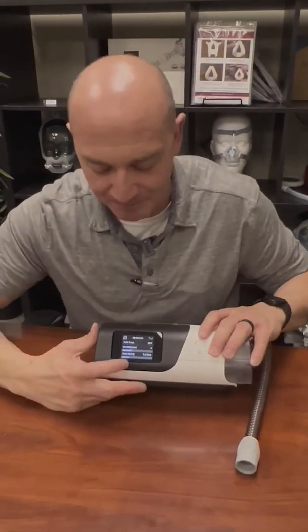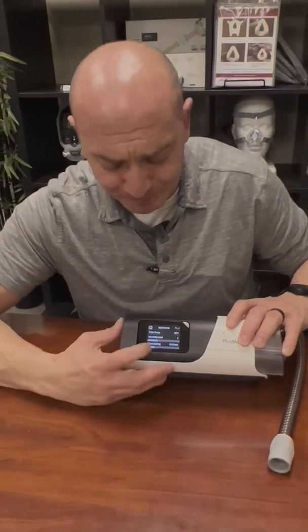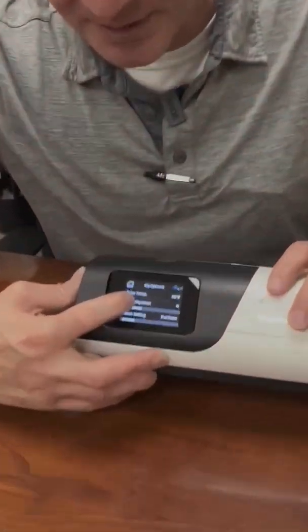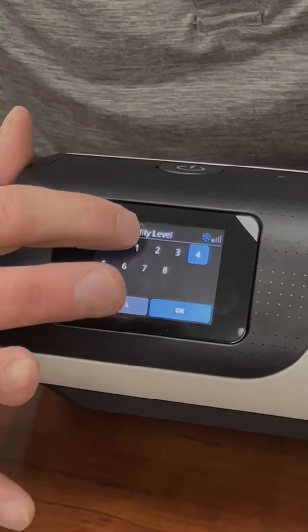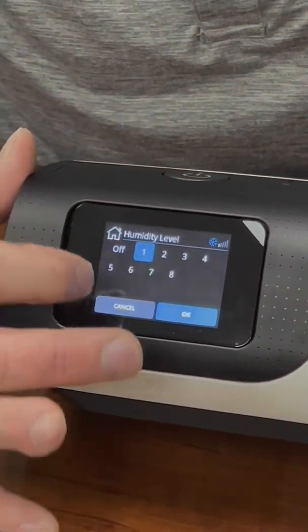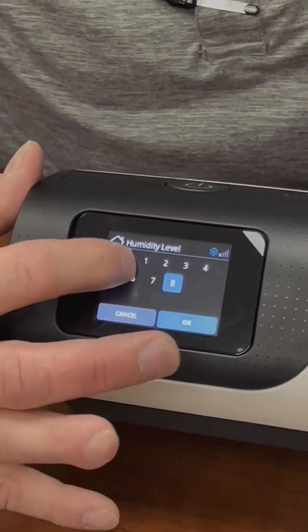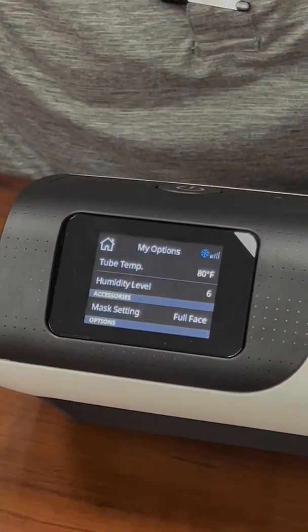Me personally, I prefer the manual because I can have greater humidity at cooler temperatures, and it's just a little bit more comfortable that way because I have a lot of sinus issues. But you can see on your humidity level, it's anywhere from 1 to 8, and you just touch the number that you want. I'm on a 6 at home, and then just hit OK.